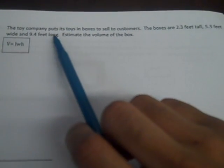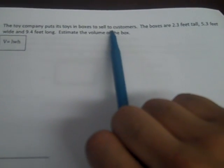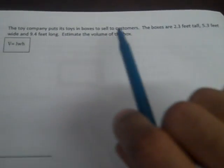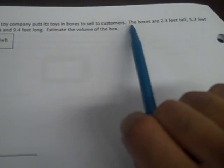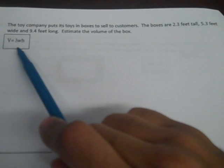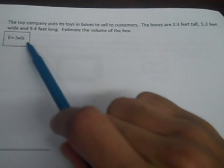The toy company puts its toys in boxes to sell to customers. So far I know that I'm dealing with a toy company and it's selling toys in boxes to customers. The boxes are 2.3 feet tall. Now I see there's a formula over here, volume equals length times width. So tall is going to tell me what the H is. So I'm going to write H right next to 2.3 feet tall.